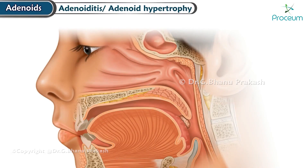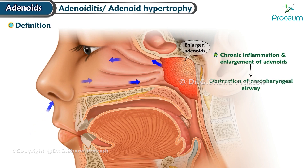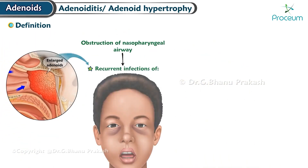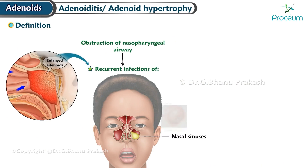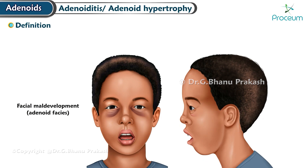Adenoiditis and adenoid hypertrophy — definition: chronic inflammation and enlargement of the adenoids, referring to a condition where the adenoids become swollen, leading to obstruction of the nasopharyngeal airway. This obstruction can result in recurrent infections of the nasal sinuses and middle ear (otitis media), as well as potential facial maldevelopment known as adenoid facies.